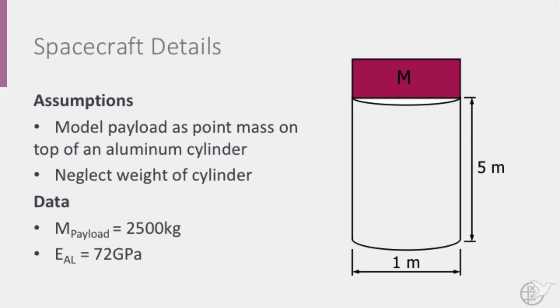Let's have a quick look at the spacecraft dimensions as well. We may assume that we can model the payload as a point mass on top of an aluminum cylinder and that the weight of this cylinder may be neglected compared to the mass of the payload of the spacecraft. The mass of the spacecraft is equal to 2500 kg and has a height L equal to 5 m and a diameter of 1 m. The modulus of elasticity for the aluminum used is 72 GPa.